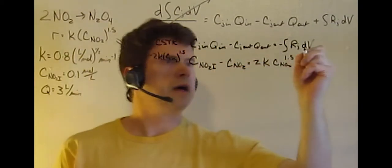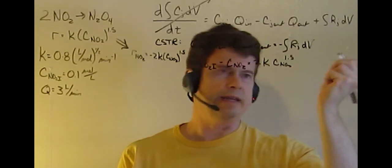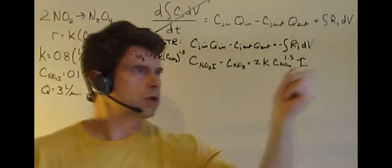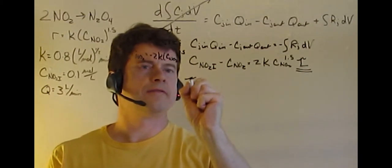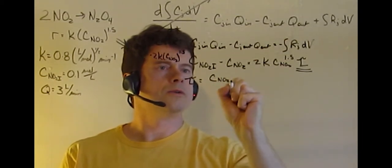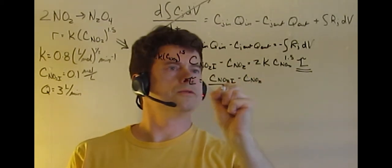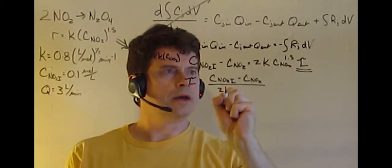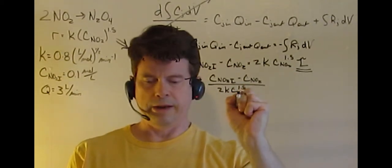Now since we're taking the Q over to the V, we can plug in that this is D tau or simply, treating those as constant, it's just tau. So we're solving for tau, which equals CNO2 initial minus CNO2 over 2K CNO2 to the 1.5.